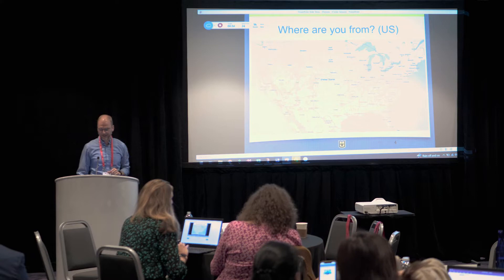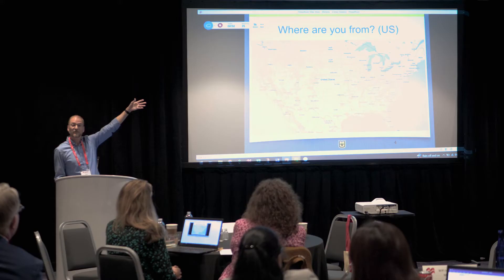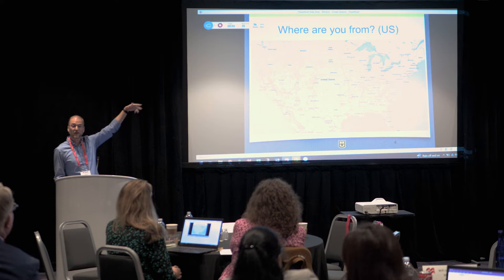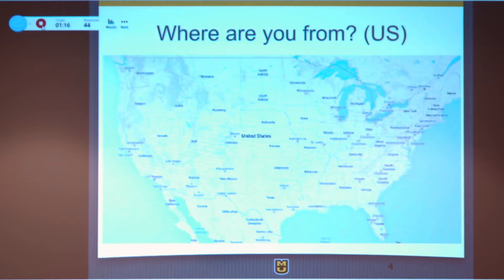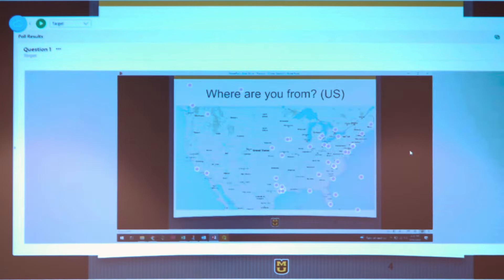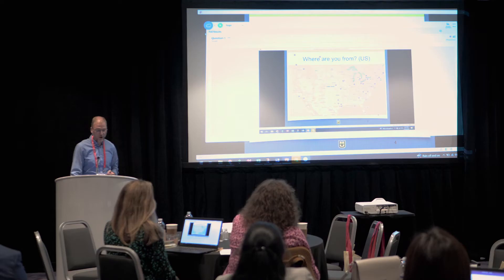If you've never used iClicker, one nice thing is you can see a running count — there are now 34, 36 people who've responded. You get a feel for how many people are in the classroom, and you can know when you've hit the upper limit. Let's stop this one and show the results. We see a nice representation from all over — perhaps not surprisingly more on the east coast than west coast. A lot of people from Texas, and some people from Atlantis.